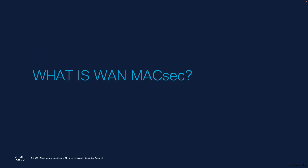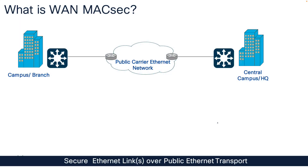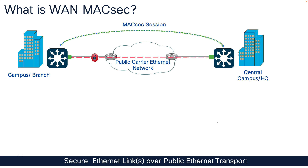WAN MACsec, in simple terms, is an extension of LAN MACsec that is designed to secure Ethernet links over a public or shared network. While traditional MACsec is commonly used in a local area network to protect data between directly connected devices, WAN MACsec applies similar encryption methods to safeguard data as it travels multi-hop over a public carrier Ethernet network.